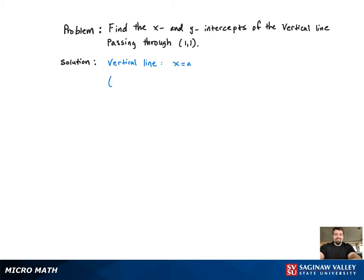Now if we just use the information that it passes through the point, then we know that the equation of our line has to be x equal to 1.